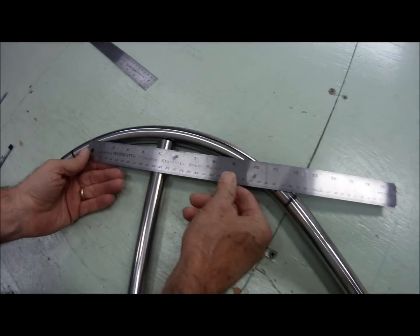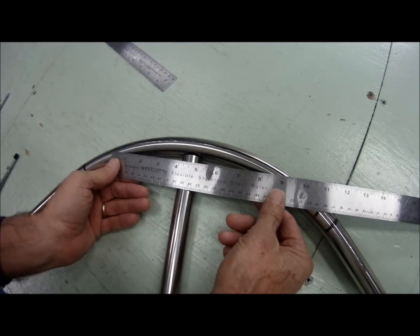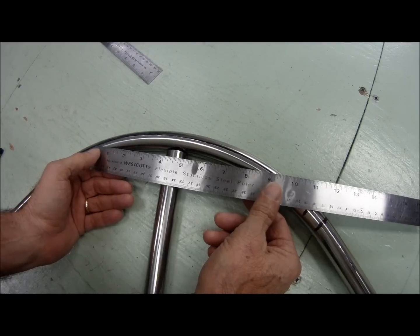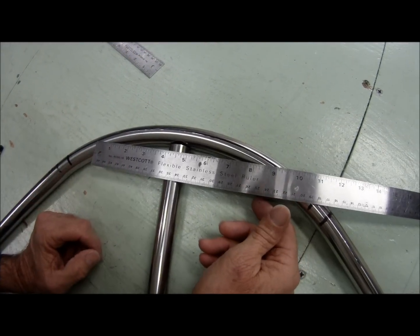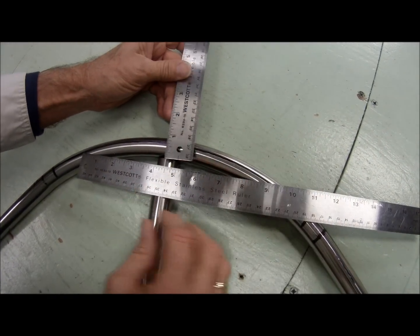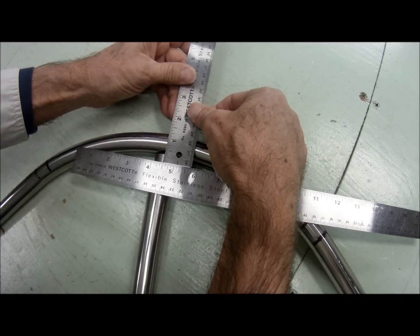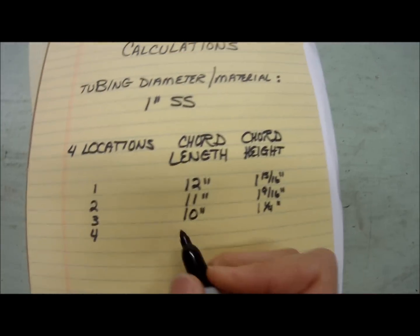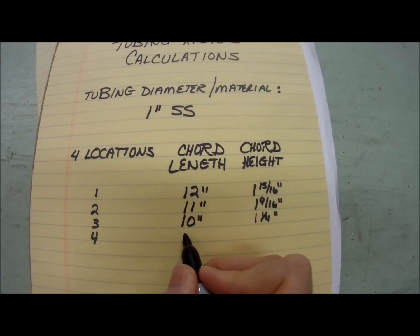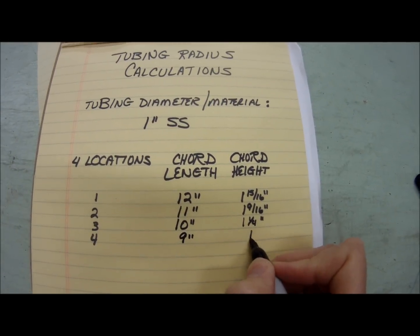All right, we're going to go ahead and do this one more time. You can do it five or six times if you want — the more you have, the more accurate you're going to be. So let's set it at nine inches now: zero at one center line and nine at the other, and at four and a half we're going to come straight up and read — in this case, one inch. So for location four, the cord length is nine inches and the cord height is one inch.